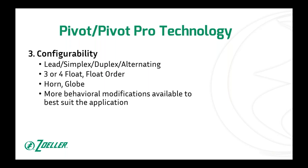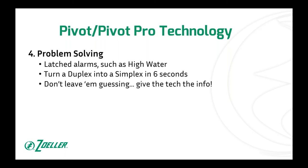Third, configurability. On a duplex panel, you can configure it as lead-lag, simplex, duplex, or alternating. You can make it three or four float, determine the float order — stop, lead, lag, high or stop, lead, high, lag — and configure whether the horn and globe are active versus latching. There are additional behavioral modifications programmable via thumb drive on Pivot or via the LCD button menu on Pivot Pro.